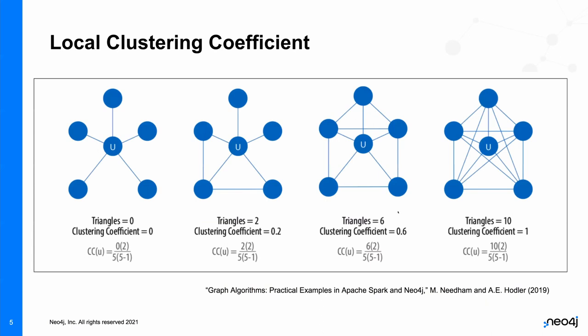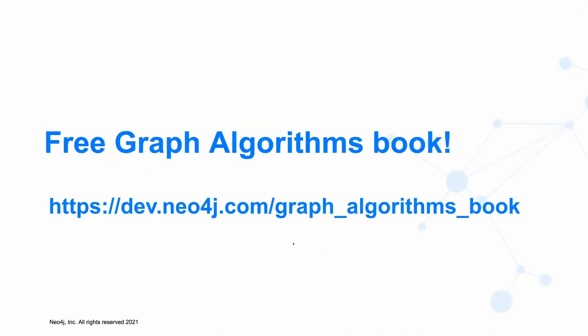The other one is local clustering coefficient, which looks at triangles within the graph to identify small communities. On the left, I have a graph with one central node and all others connected to it but not to each other — no triangles, so clustering coefficient is zero. On the right, all nodes are connected to each other, lots of triangles, clustering coefficient is one. It's a great way to identify small communities. I highly recommend downloading the free graph algorithms book, which covers these and many more calculations in both Neo4j and Apache Spark.